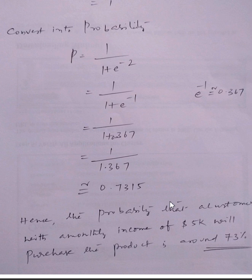The probability that a person with $5,000 monthly income will buy the product is around 73%. For such applications we can use logistic regression, and similarly we can practice more examples.